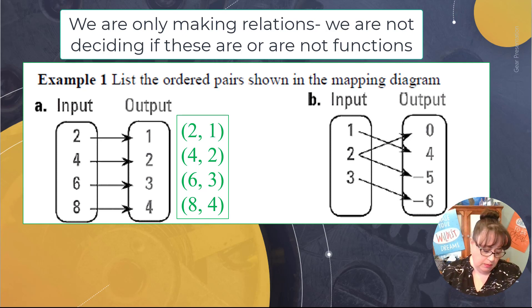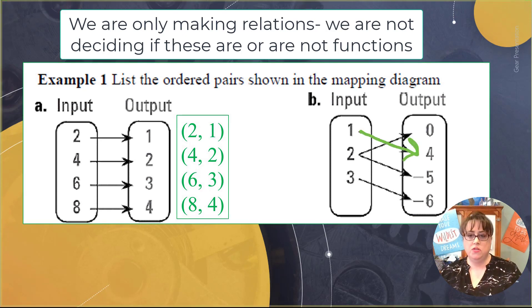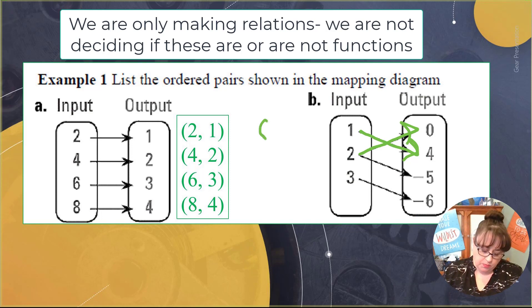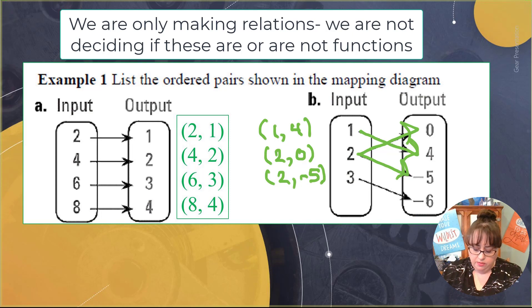So on the first arrow, you can see that the 1 goes to the 4. And so our first ordered pair would be 1, 4. Now our 2 goes to 0. So we would have an ordered pair 2, 0. But we also have 2 going to negative 5. So 2 also goes to negative 5. And then 3 went to negative 6. So all you're doing is you're matching them up to which parts they go to.